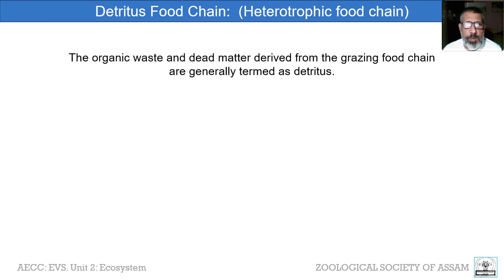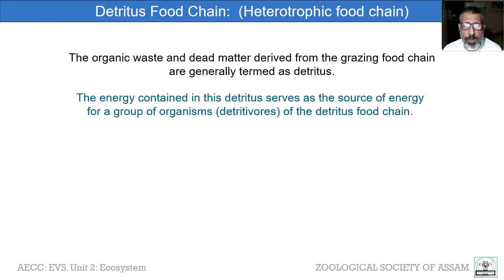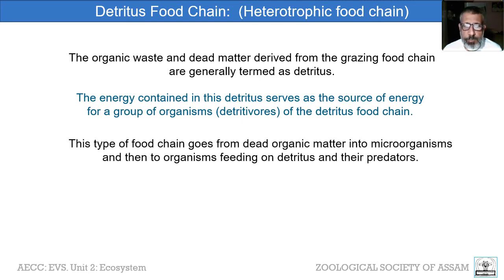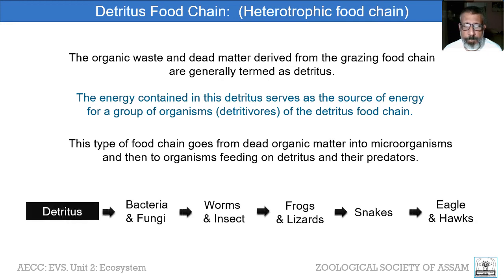The detritus food chain begins with the organic waste and dead matter derived from the grazing food chain, generally termed detritus. The energy in the detritus does not go to waste but serves as a source of energy for detrivores. This food chain goes from dead organic matter to microorganisms — bacteria and fungi decompose it — then to organisms such as worms and insects that feed on the detritus, and further to frogs, lizards, snakes, eagles, and hawks.